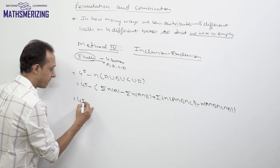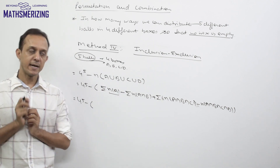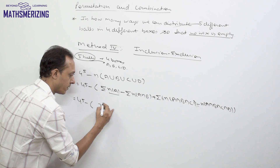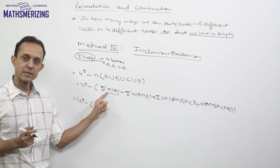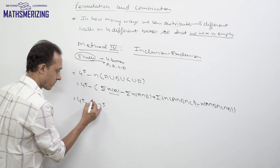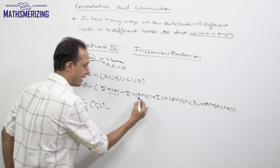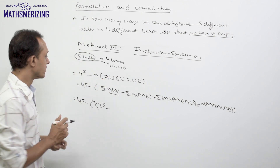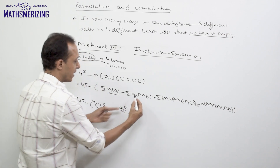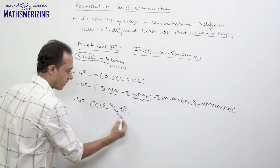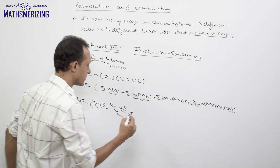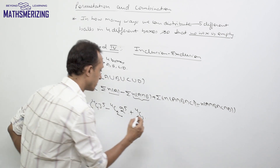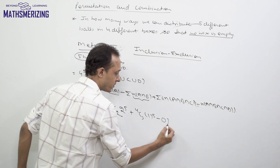By inclusion-exclusion: |A| means box A is empty, so each ball has 3 options, giving 3⁵; and there are 4C1 such terms. |A ∩ B| means both A and B are empty, so each ball has 2 options, giving 2⁵; there are 4C2 such terms. For any 3 boxes empty, each ball has 1 option giving 1⁵; there are 4C3 such terms. If all 4 are empty there is no valid arrangement.